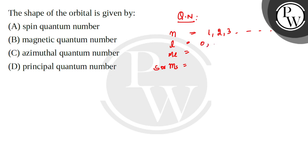It shows values from 0 to n-1. So if we ask the shape of the orbital, the shape is given by L, and L is an azimuthal quantum number. So your C option is completely correct. You can mark that.